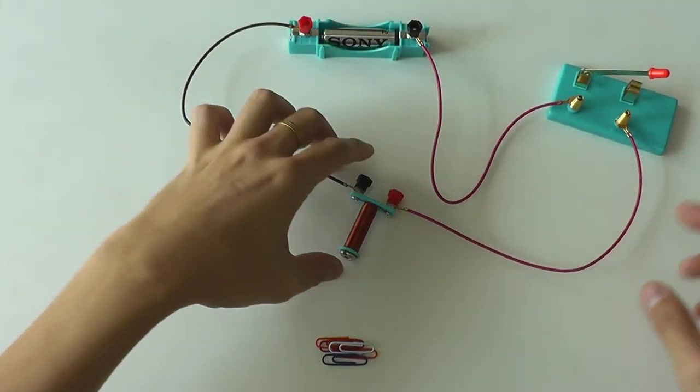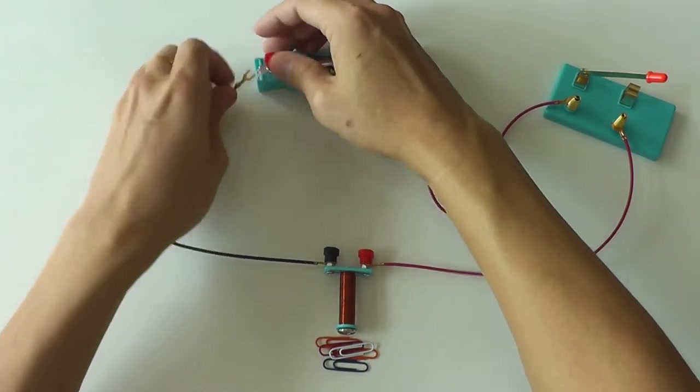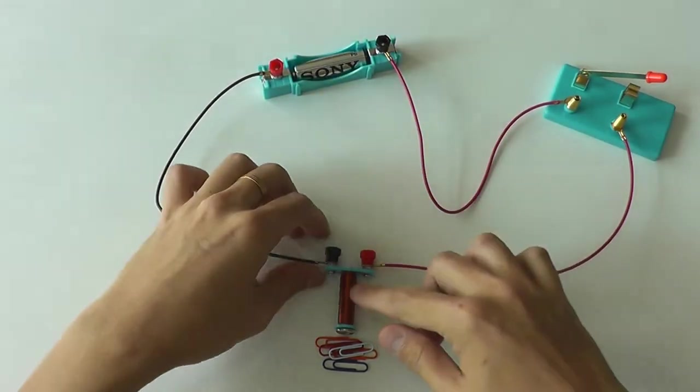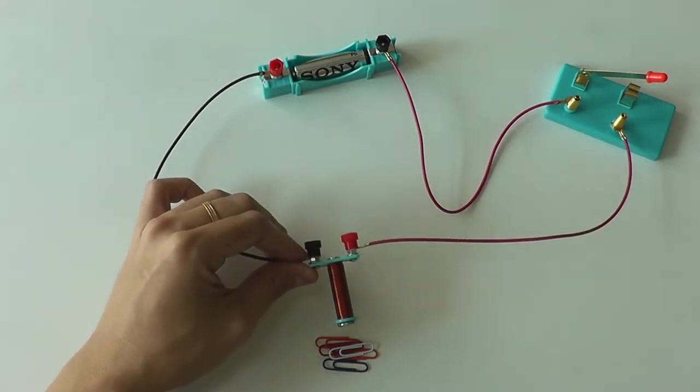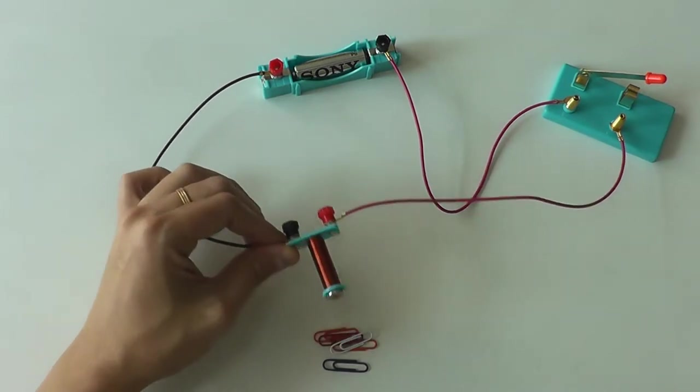So now let's test again. The switch is still open now. This electromagnet is not magnetized yet. So if I put it over the paper clip, it does not attract at all.